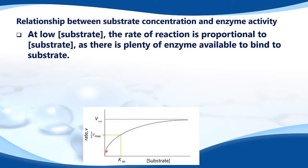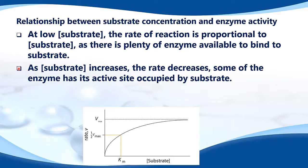Therefore the rate of reaction is the highest. As the concentration of the substrate increases, the rate decreases, as some of the enzyme has its active site occupied by substrate. So from the graph, we can see that the line is becoming less steep, which means the rate of reaction is decreasing, and this is due to the fact that some of the enzyme has its active site occupied by substrate.